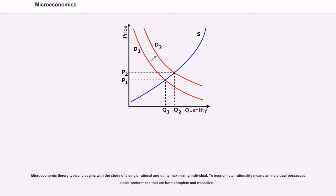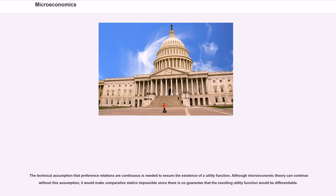Microeconomic theory typically begins with the study of a single rational and utility-maximizing individual. To economists, rationality means an individual possesses stable preferences that are both complete and transitive. The technical assumption that preference relations are continuous is needed to ensure the existence of a utility function. Although microeconomic theory can continue without this assumption, it would make comparative statics impossible since there is no guarantee that the resulting utility function would be differentiable.